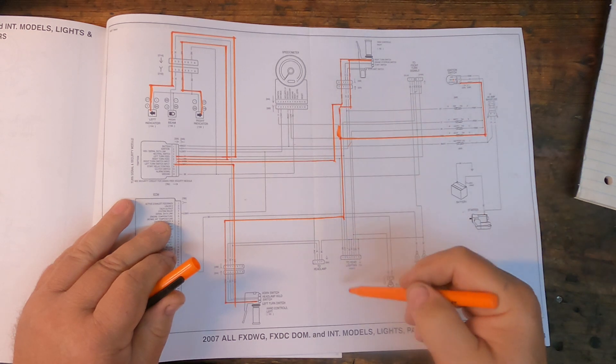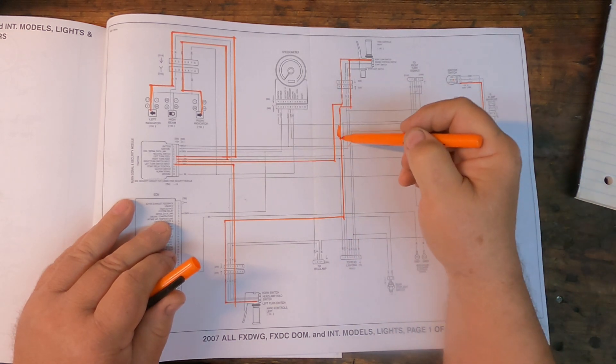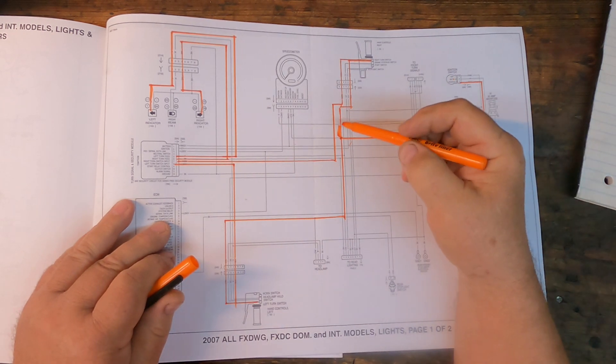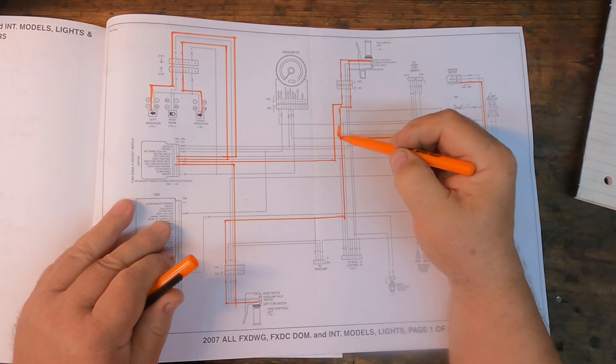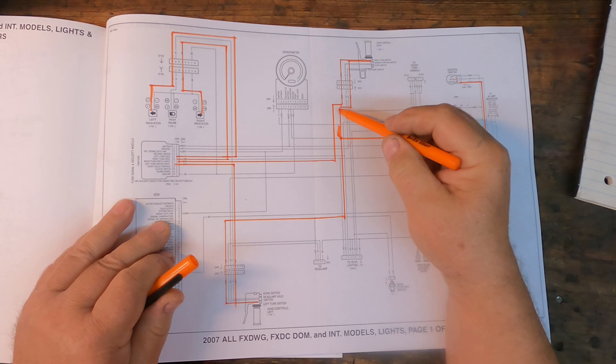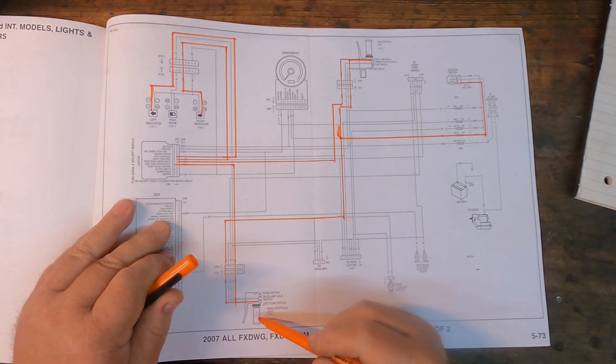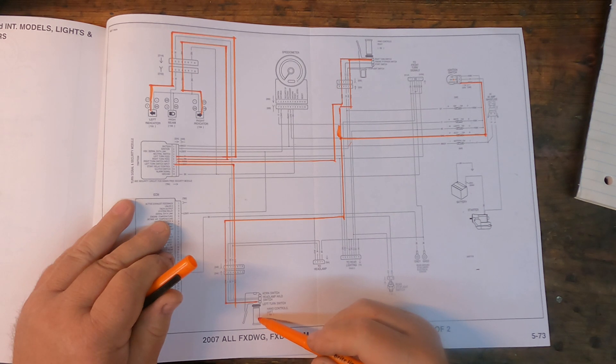And we're looking at the turn signal wires just because we're comparing apples to apples because I got turn signal wires on the FXST we're going to look at. And the wire went to one turn signal on one hand grip and the other turn signal switch on the other hand grip.